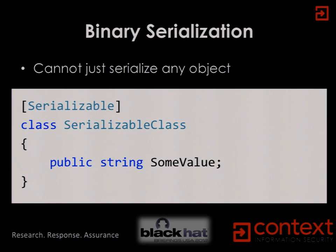Binary serialization is baked into the .NET framework with special support for it. But not every object can be serialized — if you had a reference to a file or some unmanaged resource, it's not something you can just serialize. So you actually have to say you want your C# or VB type to be serializable by specifying an annotation on that class which basically says, 'I approve this for serialization and I will take responsibility for it.'